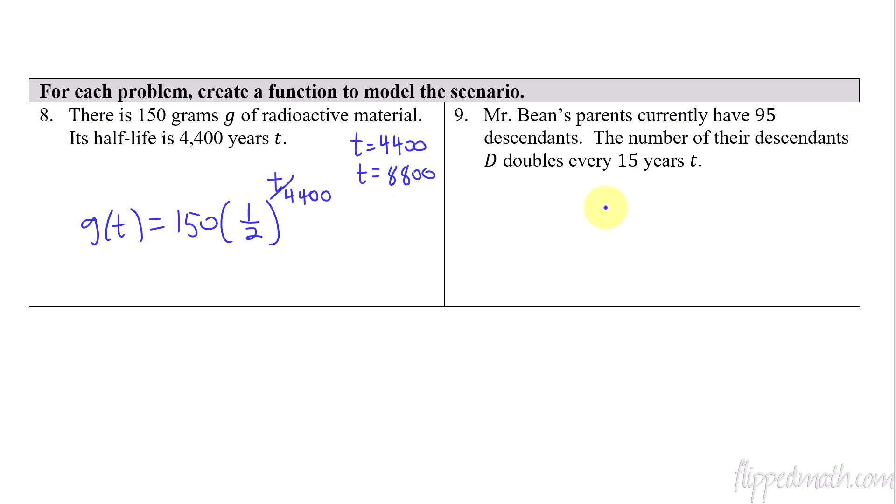All right, now the doubling time. So it's the same concept. We're going to say D for descendants. So Mr. Bean's parents currently have 95 descendants. This is actually true as of right now when I'm making this video. I know I got a large family. So then the number of their descendants is doubling every 15 years T. So D of T will equal—our initial amount would be 95. We're doubling now. So I'm going to multiply by 2. How often? T over 15. That's my exponent. So if 15 years goes by, it would be doubling once because 15 divided by 15 would give you 1. Okay, and then that's it for that.